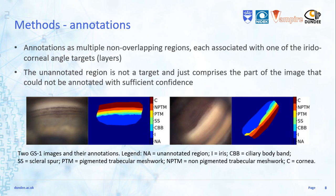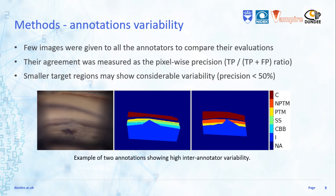The dark blue region is the periphery of the images that could not be annotated with confidence because of its reduced lightness and sharpness. All the annotators were provided with a limited set of common images to compare their annotations. The agreement among two annotators was measured as the pixel-wise precision of the first with respect to the second — by precision, we mean the ratio between the true positives and the sum of the true positives and the false positive pixel values.